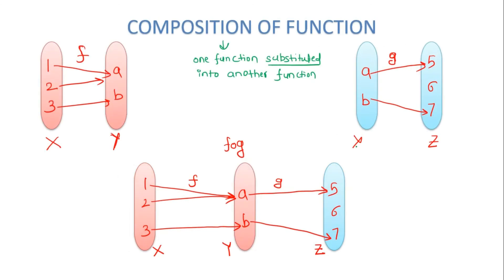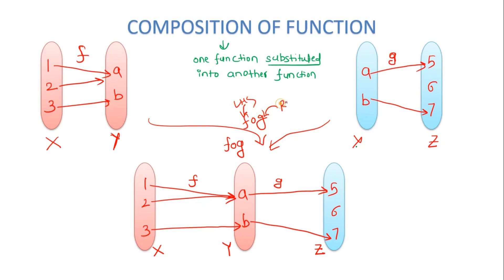The next topic is composition of functions. Composition means one function is substituted into another function to produce a new function. When working with arrow diagrams, you find the common portion between two diagrams. For FOG (F composition G), G is placed on the right and F on the left. You check that the second set of G matches the first set of F, merge them, and the resulting diagram is the composition.